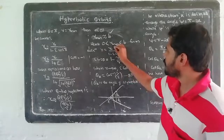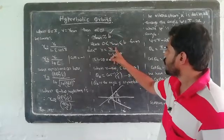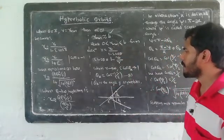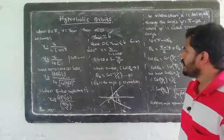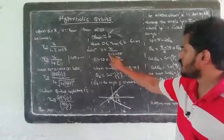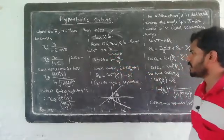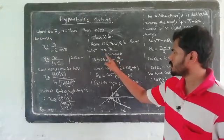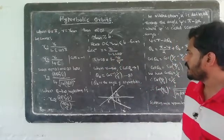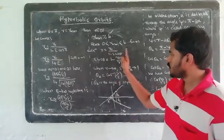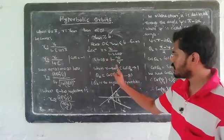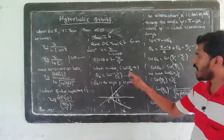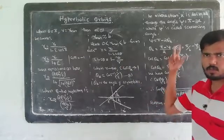When the impact parameter B equals zero, we substitute into the orbit equation R equals R0 divided by 1 minus epsilon cos theta. As R tends to infinity, epsilon cos theta tends to 1.